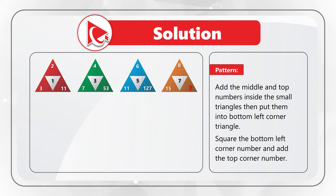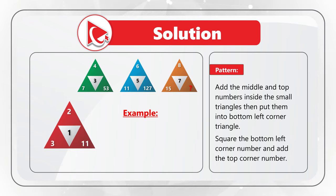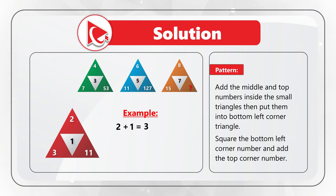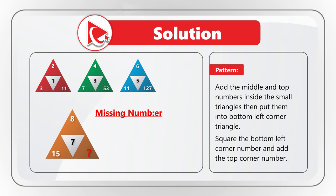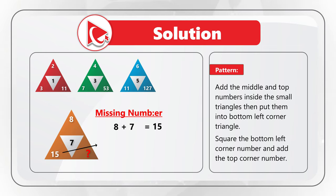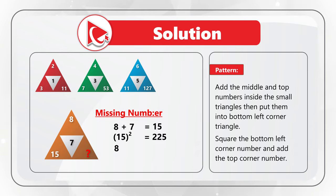Armed with this information, let's find the missing number. First, add 8 plus 7 — top and middle numbers — which equals 15. You can confirm this by looking at 15 in the bottom left corner of the triangle. 15 squared equals 225. Then to find the missing number, add 8 (top of the triangle) plus 225, giving a final answer of 233. The correct answer is choice C, 233.